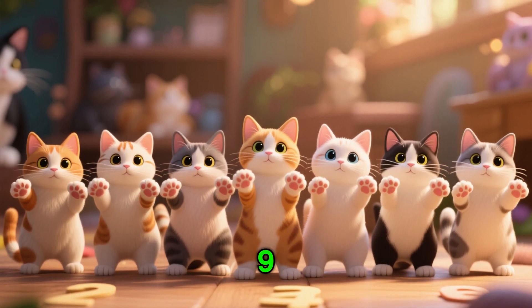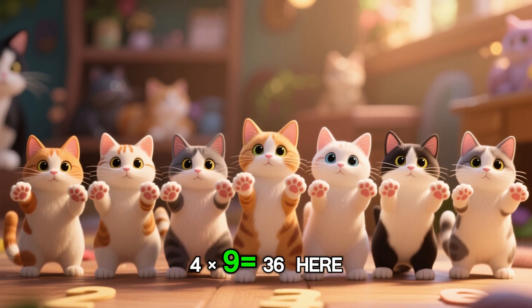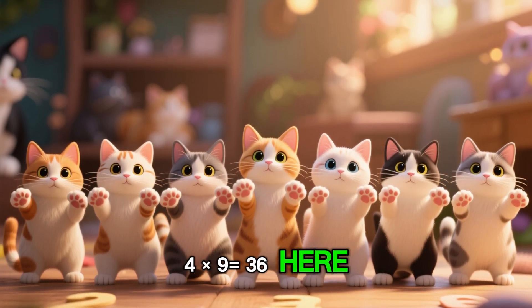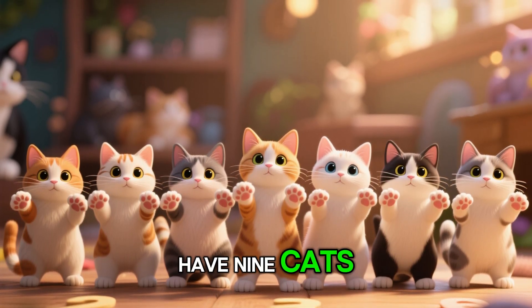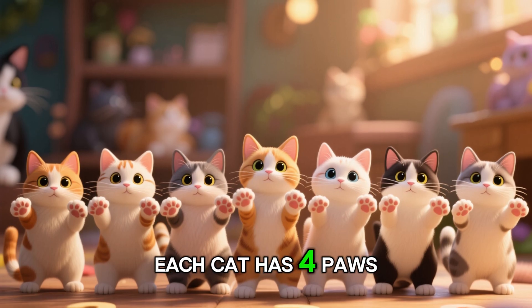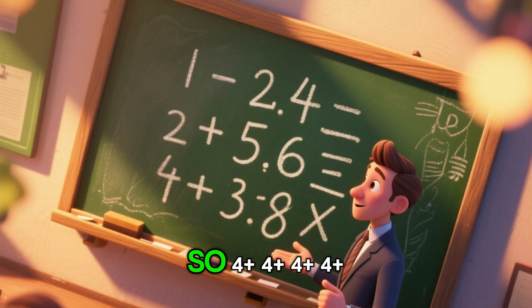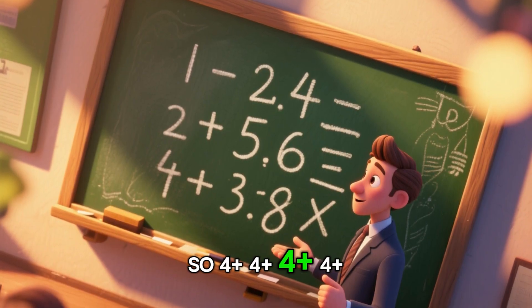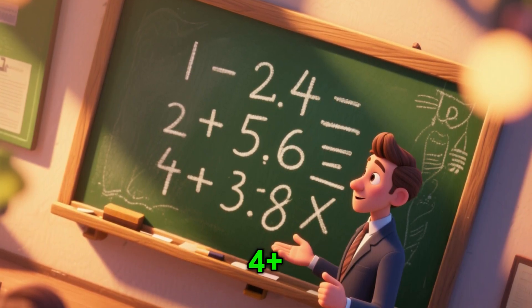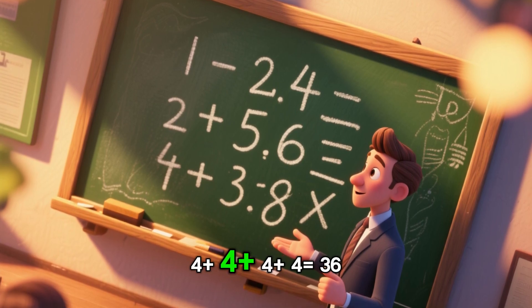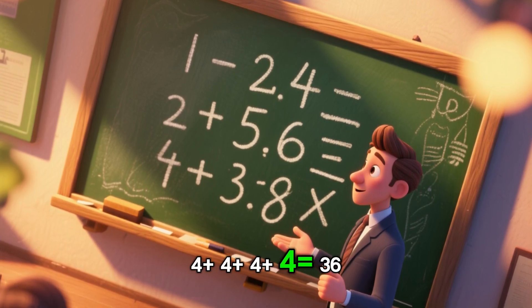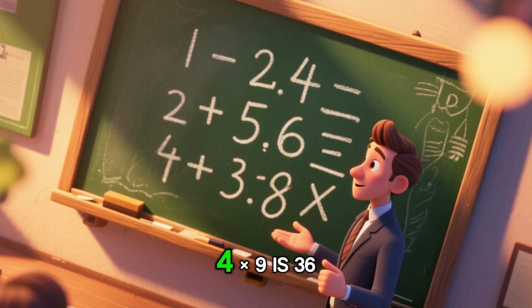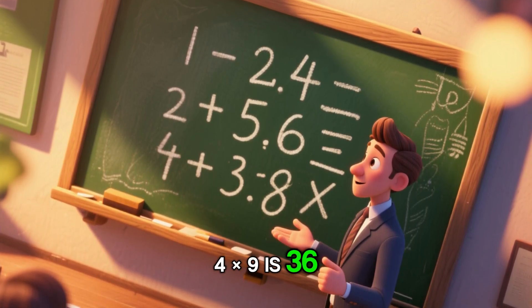Next we have 4 times 9. 4×9 equals 36. Here we have 9 cats, each cat has 4 paws. So 4 added 9 times equals 36. So 4×9 is 36.